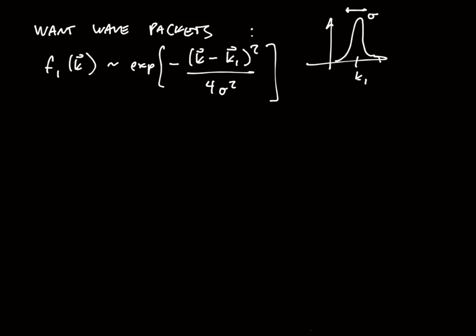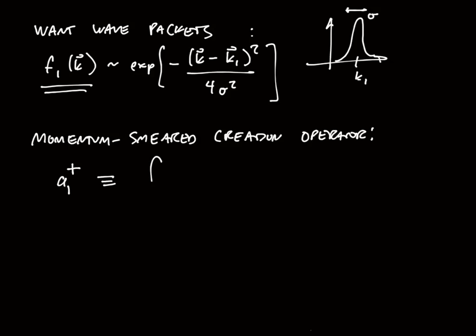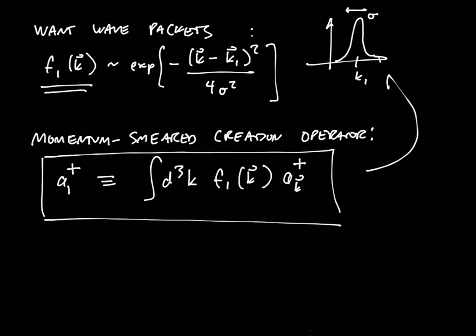Given this function f of k, we can now construct a smeared momentum operator - or rather, excuse me, a momentum smeared creation operator. This momentum smeared creation operator is, for example, a₁ dagger, which is just defined as taking the usual momentum operator and smearing it with this function. This creates a state in some superposition of momentum given by this function right here.